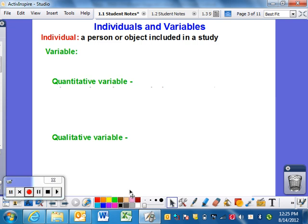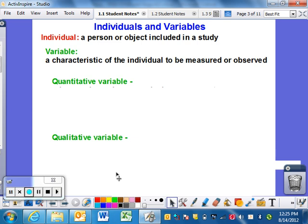It doesn't matter what it is - it can be a person, an object, or a place, all based on what the study is doing. A variable - you'll hear this word over and over - is a characteristic of the individual to be measured or observed. We're going to measure or observe something and call it a variable.